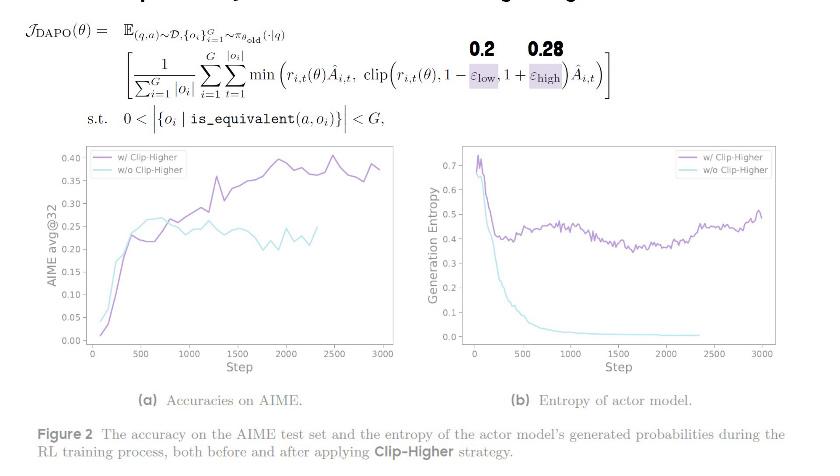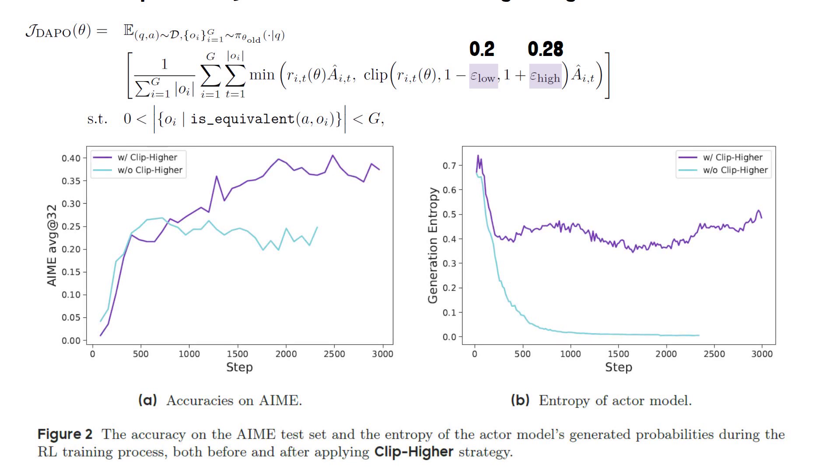In the following figure, we can see the impact of Clip-Higher. On the left chart, the purple line shows that the accuracy of the model is improved when using Clip-Higher, comparing to the baseline which is using the default value. On the right chart, we see drop of entropy when not using Clip-Higher. This is the entropy collapse phenomenon. We see that Clip-Higher avoids this entropy drop.